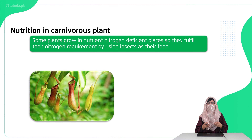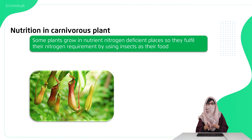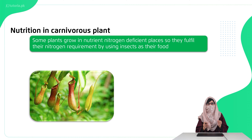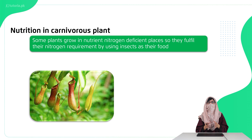Not all nutrients are present everywhere in the world. For example, there are some areas where nitrogen is less. Plants that grow in nitrogen-deficient places suffer from nitrogen deficiency. Since nitrogen is essential for RNA, DNA, and amino acids, plants without sufficient nitrogen cannot grow bigger. To fulfill this nitrogen deficiency, some plants have modified their structures to capture and kill insects — we call these carnivorous plants, meaning meat-eating plants.